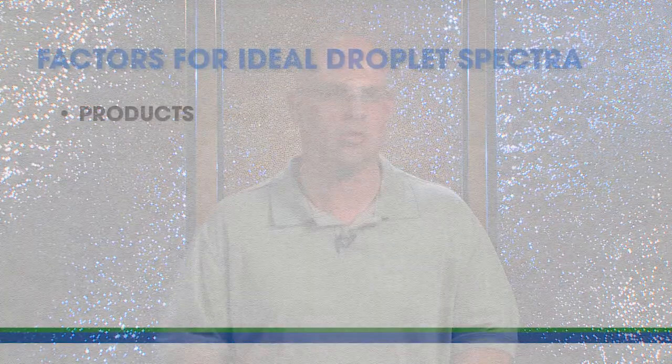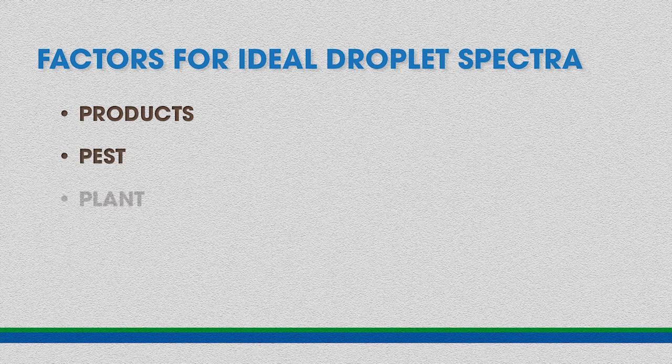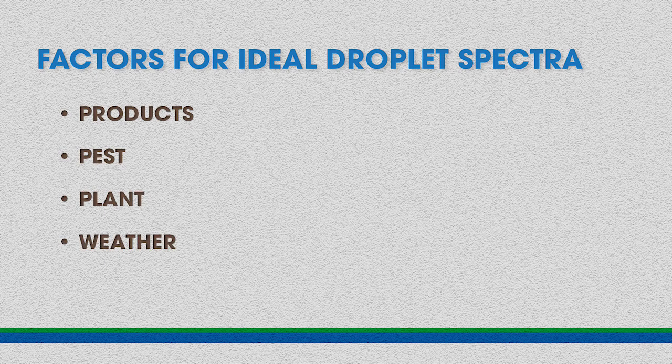What is the ideal droplet spectra for your application? That depends on a lot of factors: what product or products you will be applying, what the pest target and targeted plant are, and what the weather conditions will be like. There's no one droplet spectra that's going to be perfect for all applications. You need to be aware of the product, the targeted plant, and the conditions under which you're going to spray. Read the label and decide what is the optimum droplet spectra for your application.